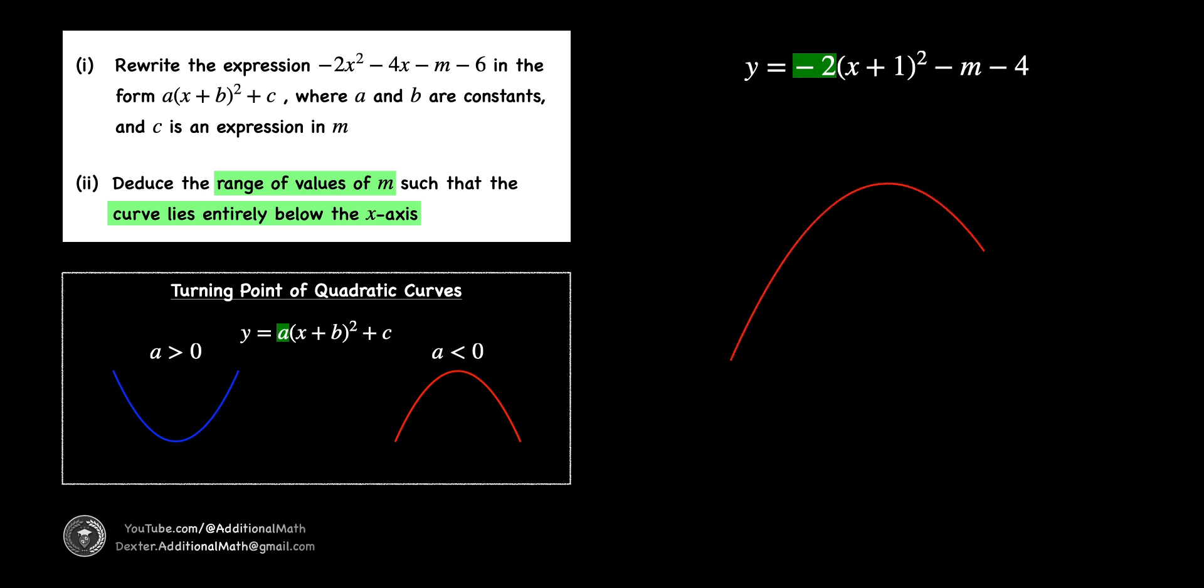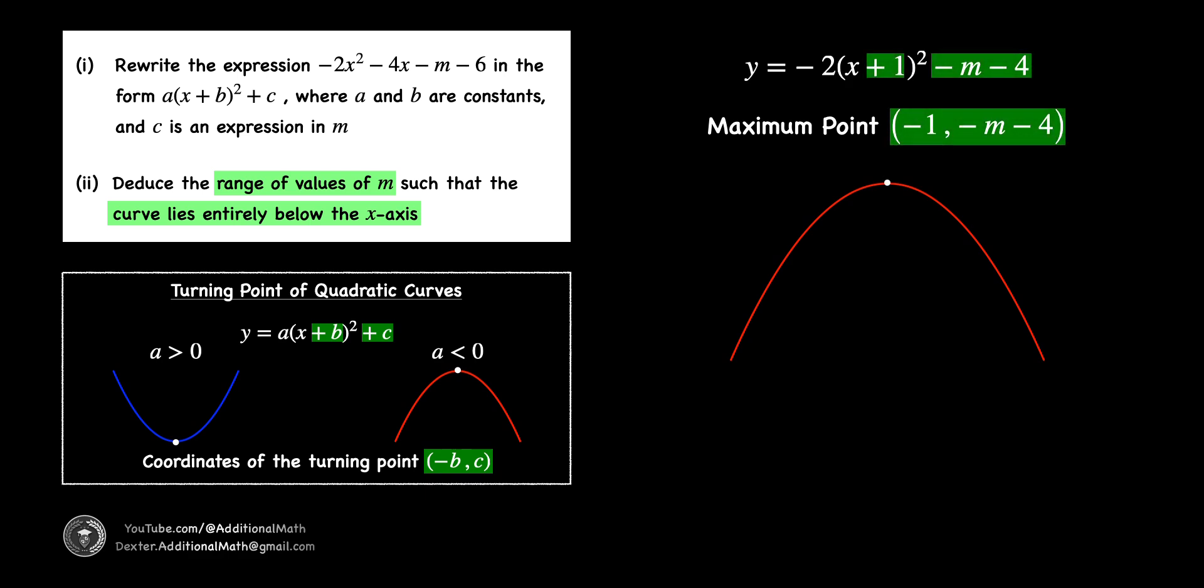Since our coefficient of x squared is negative 2, we have a maximum curve. The coordinates of the turning point of any quadratic curve is negative b comma c from the completing the square form. Thus, the maximum point of our curve has an x coordinate of negative 1 and a y coordinate of negative m minus 4.